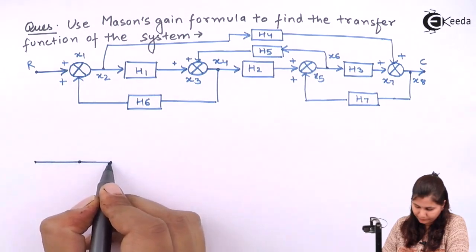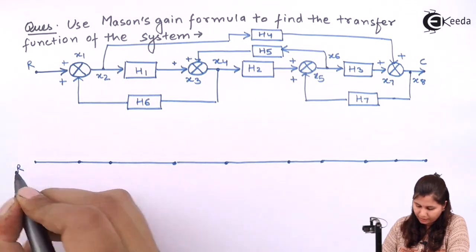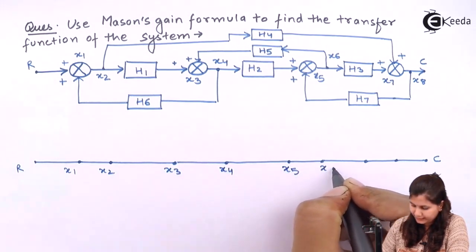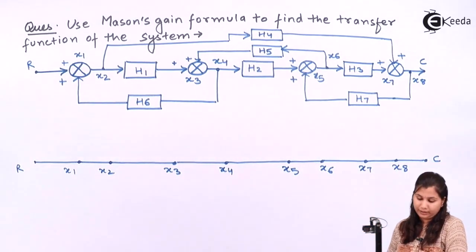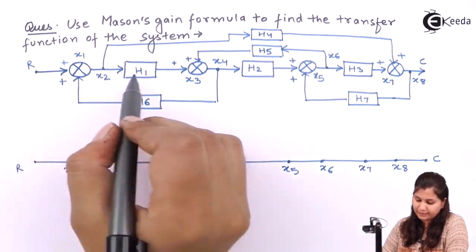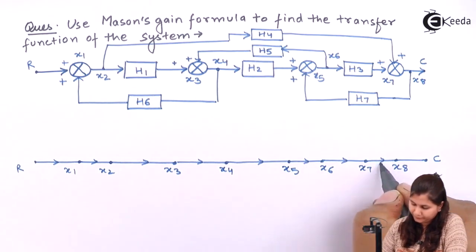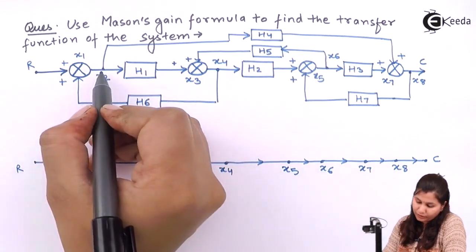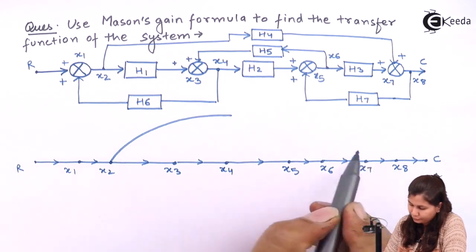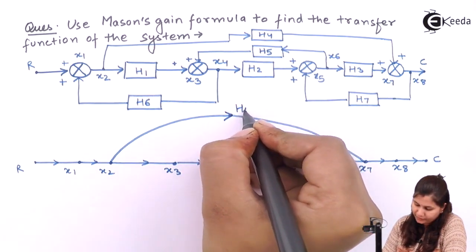We mark them as R and C for the output, then X1, X2, X3, X4, X5, X6, X7, and X8. The flow of the signal will be in this direction, from input towards the output. Between node X2 and X7 we have H4, so we draw it from X2 to X7 with transfer function H4.